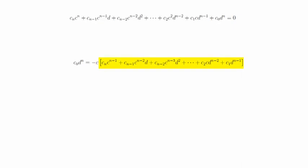The term inside the brackets is just an integer, so we have negative c times some integer equals c₀ times d^n. In other words, c divides c₀ times d^n.